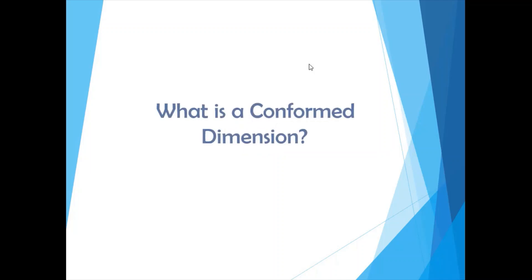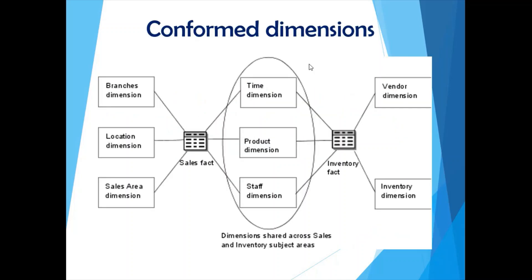The last question for today and for this whole series: what is a conformed dimension? A conformed dimension is a dimension that can be used by all fact tables — it's a common dimension. In this example, there are two fact tables: a sales fact table (a sales data mart) and an inventory fact table (an inventory data mart). Three dimension tables — time dimension, product dimension, and staff dimension — are linked to both fact tables. They share these same dimension tables while also having their own specific dimension tables.